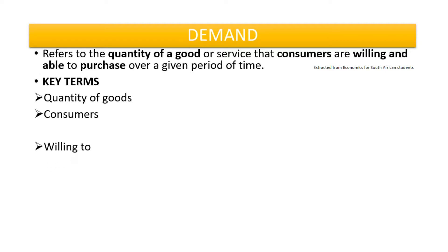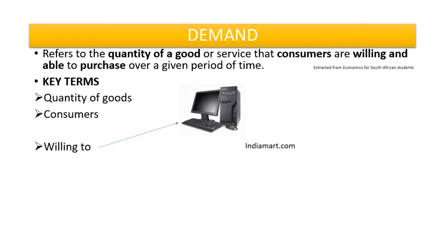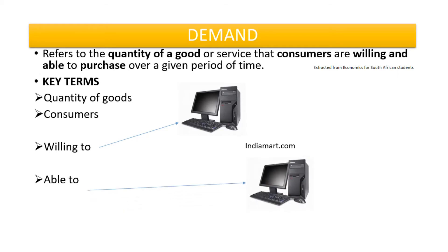The third key term is 'willing to.' For example, there is a computer that is for sale. But if the person is not willing to buy the computer, the person is not counted as part of demand. For you to be counted as part of demand, you have to be willing to purchase that product. The next term is 'able to.' Let's say you are willing to buy the computer, but if you are not able to — you don't have money or the means to purchase it — still you are not counted as part of demand.